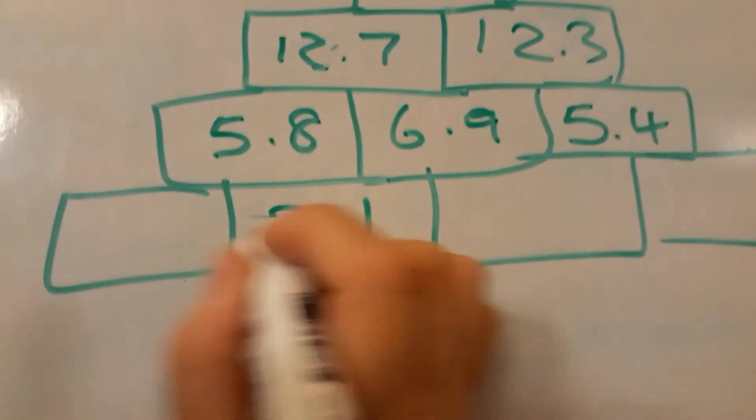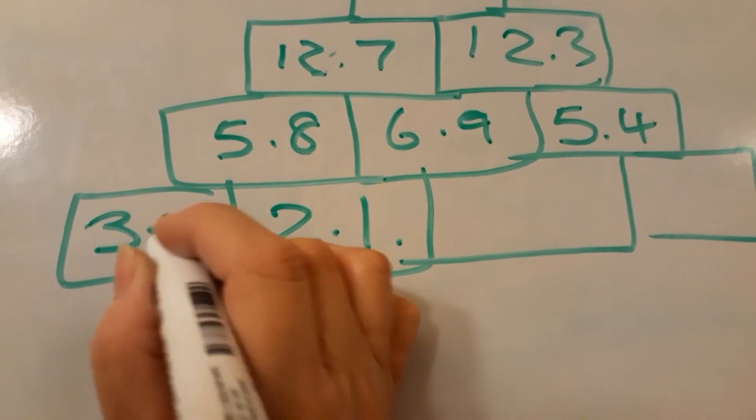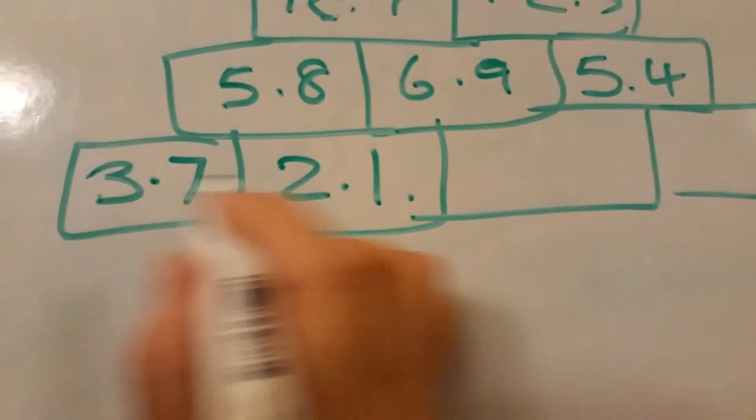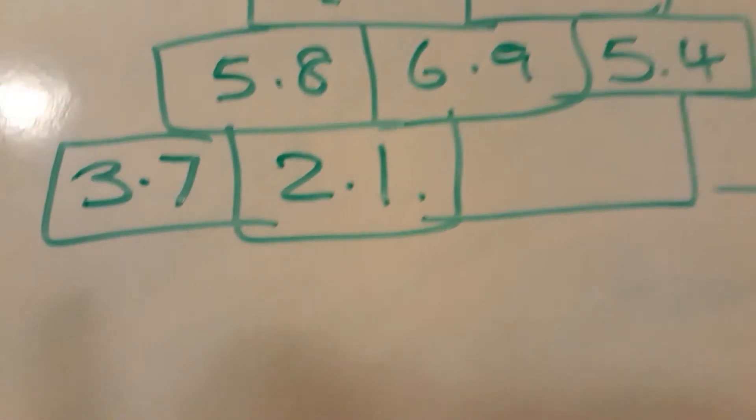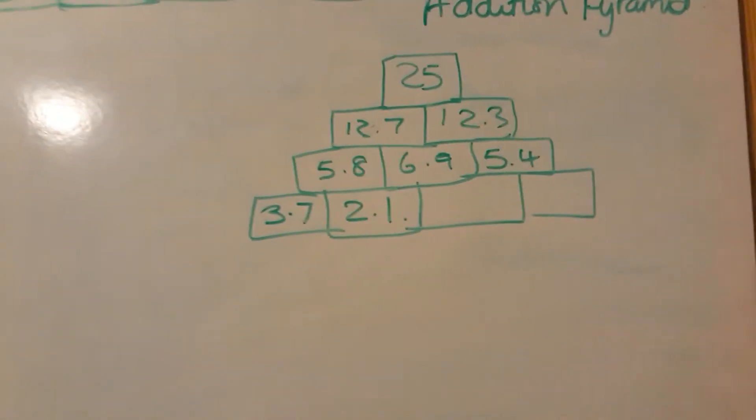And then this one, obviously 2, 3.7. So those two make five, and those two make eight. So there we go, 3.7.